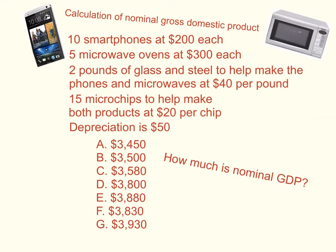Here is the information given in the problem. In this economy we are making 10 smartphones at $200 each, 5 microwave ovens at $300 each, 2 pounds of glass and steel to help make the phones and microwave ovens — these are intermediate products — at $40 per pound, 15 microchips to help make both products at $20 per chip, and depreciation is $50. The possible answers are below for how much nominal GDP should be.